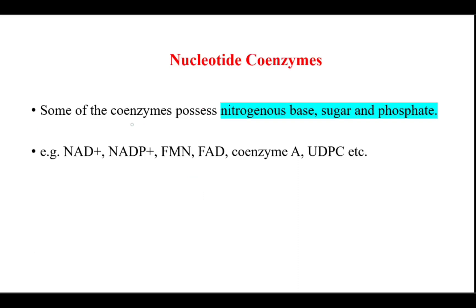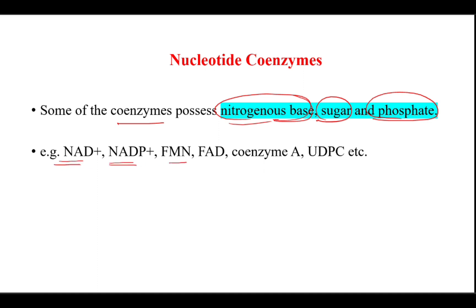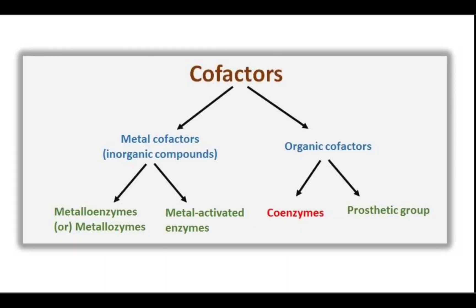Some coenzymes possess a nitrogenous base, sugar, and phosphate, and when they have these three components they are called nucleotides. So NAD+, NADP+, FMN, FAD, and coenzyme A are all nucleotides which are acting as coenzymes.